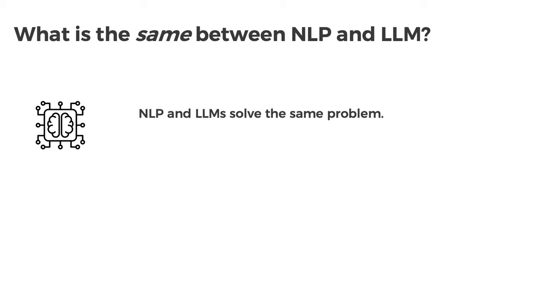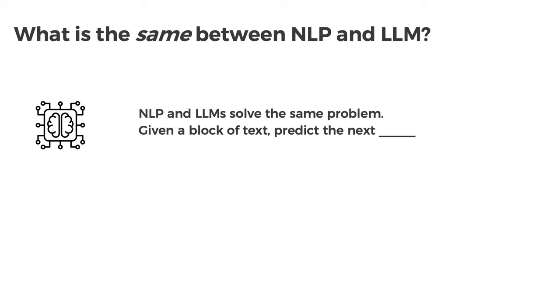Now that we've covered the differences, let's talk about how they're the same. NLP and LLMs are really solving the same problem. Specifically today I'm focusing on generation of text — summarizing a document, conversing with a human while taking context into account, writing a poem. That same problem they're both solving is: given a block of text, predict the next word. That's all they're doing — predicting the next word when given text.